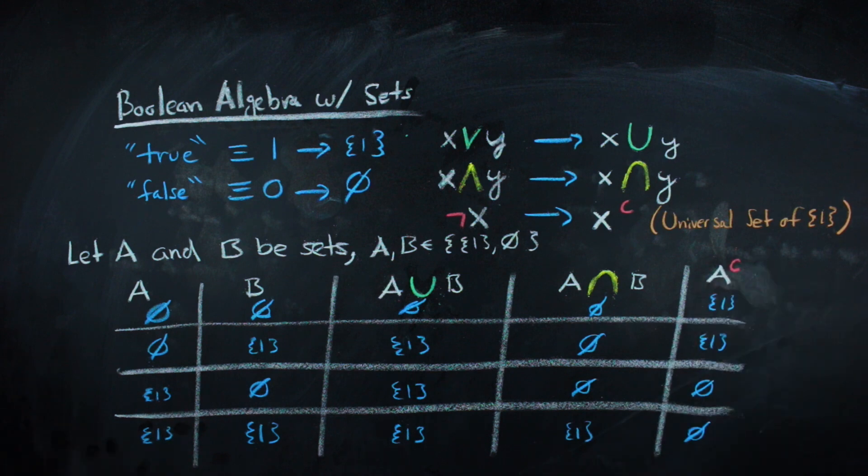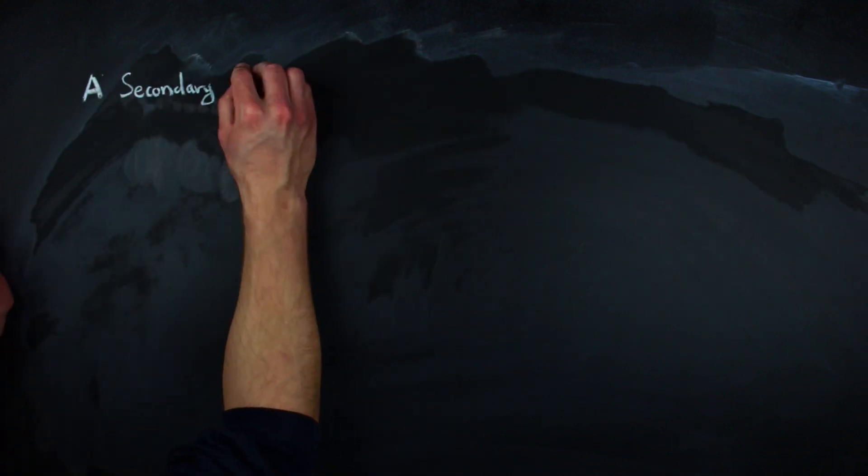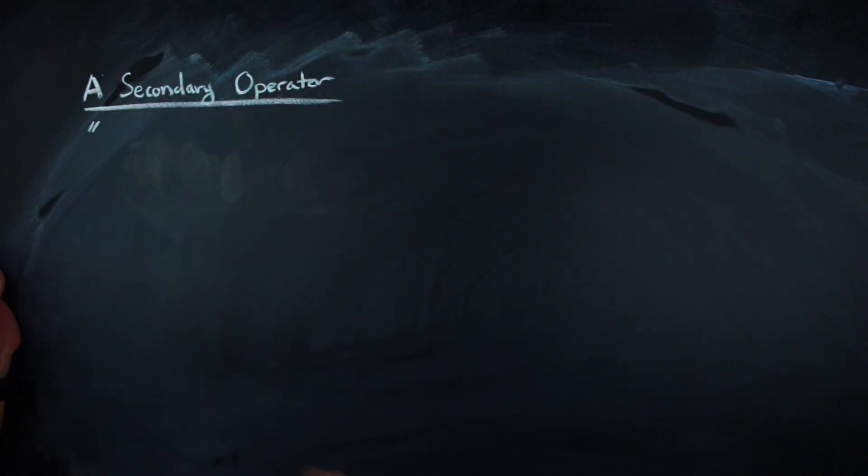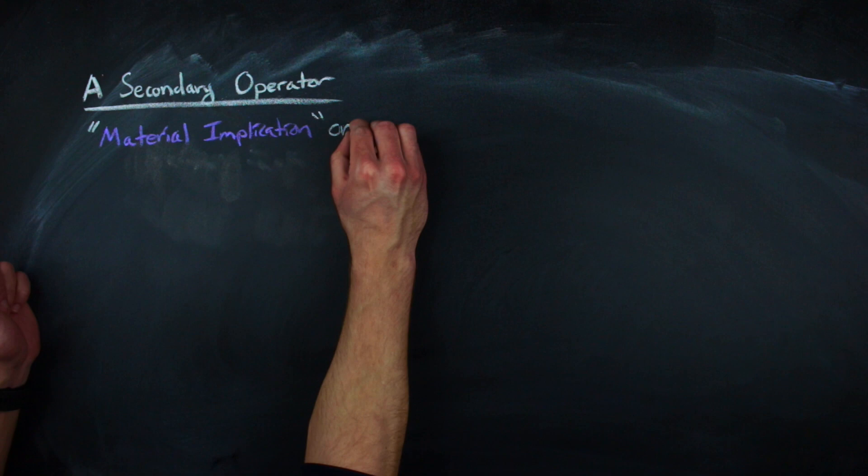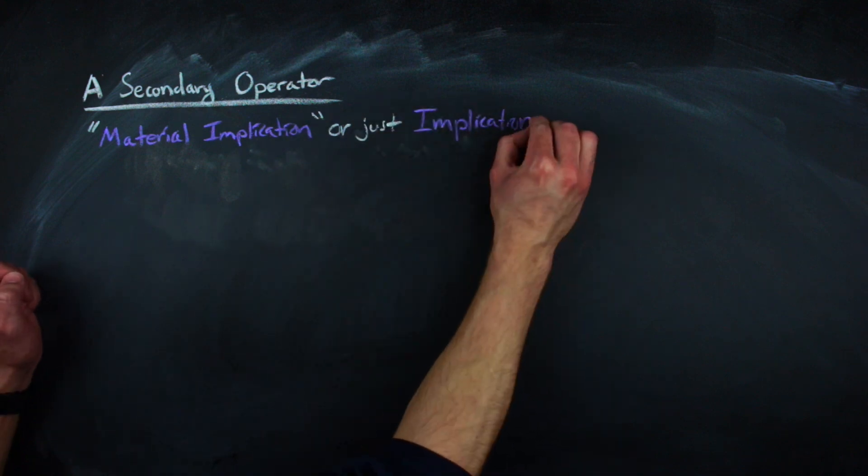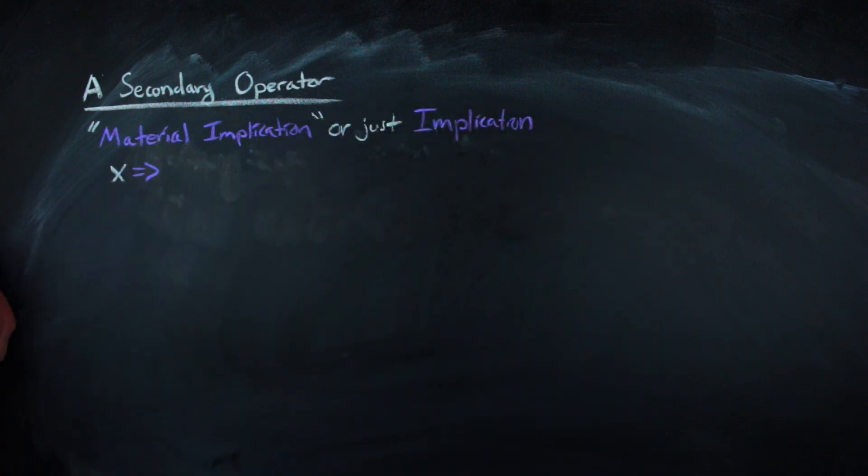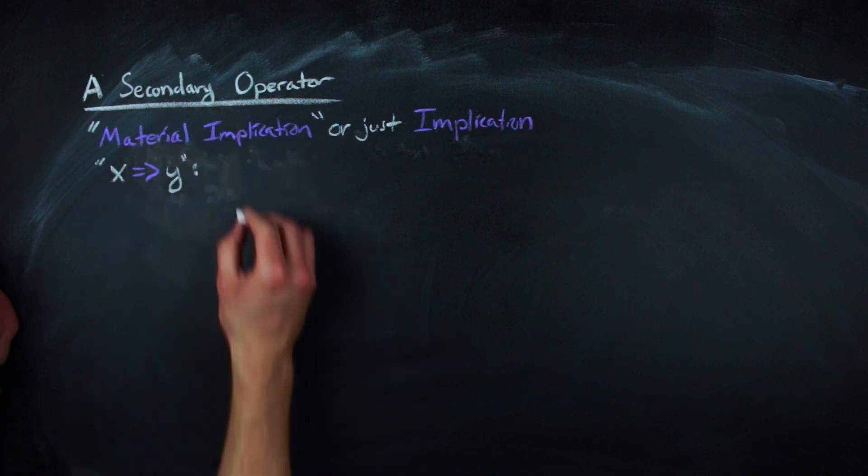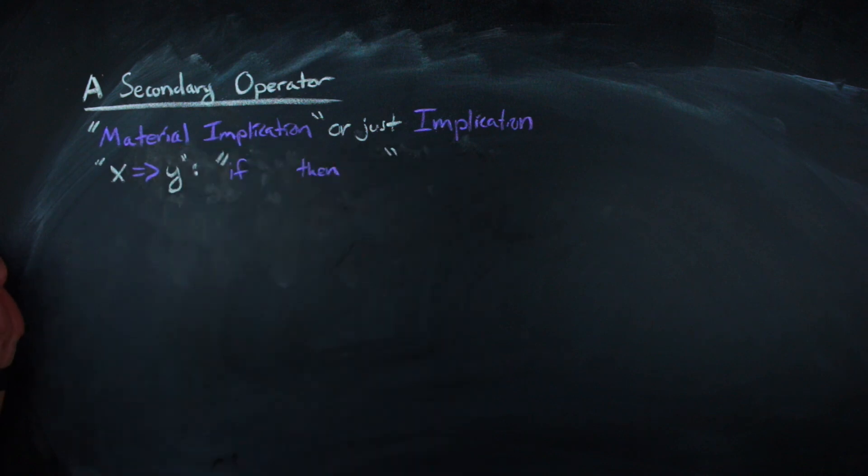Arguably the most important piece of Boolean algebra for our mathematicians is the content of a secondary operator, called material implication, aka implication. Translating the symbols into language, we get the basis for many mathematical statements. If x, then y. Or x implies y.